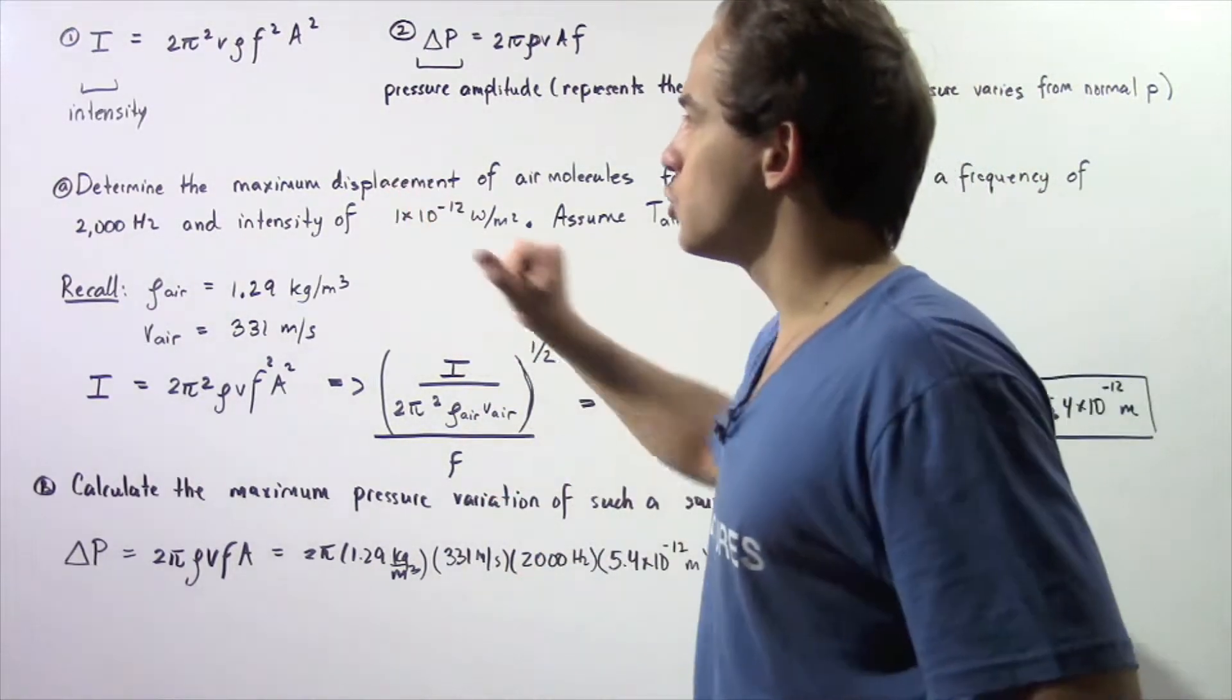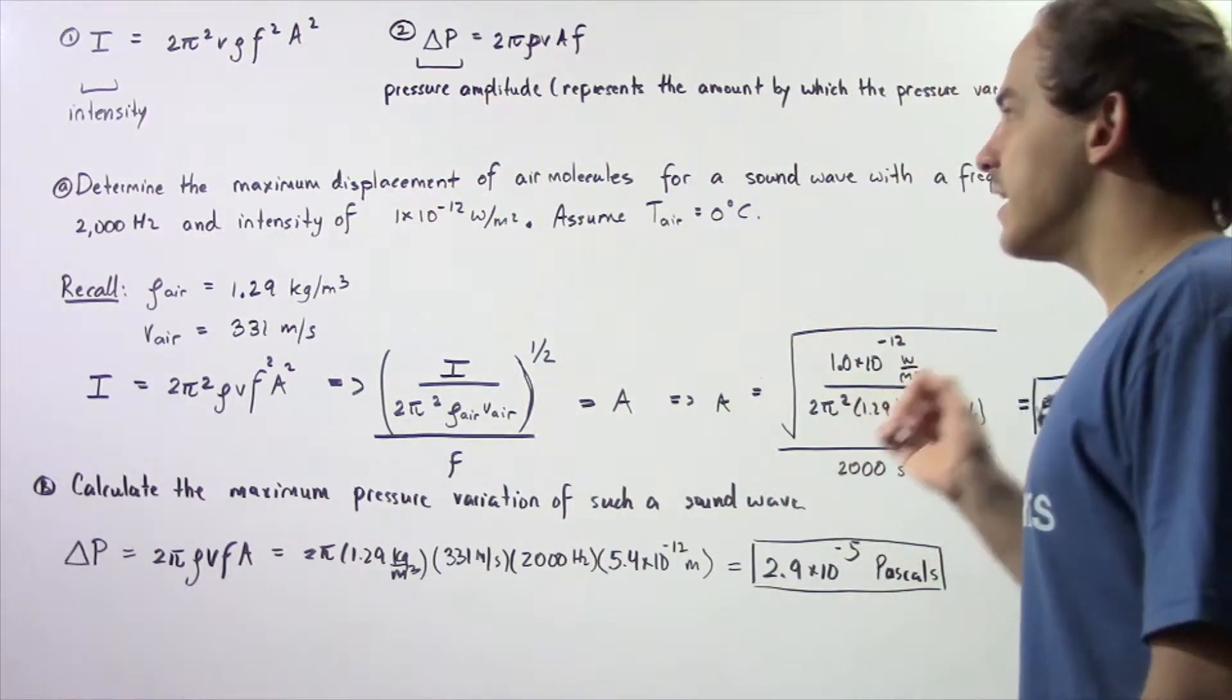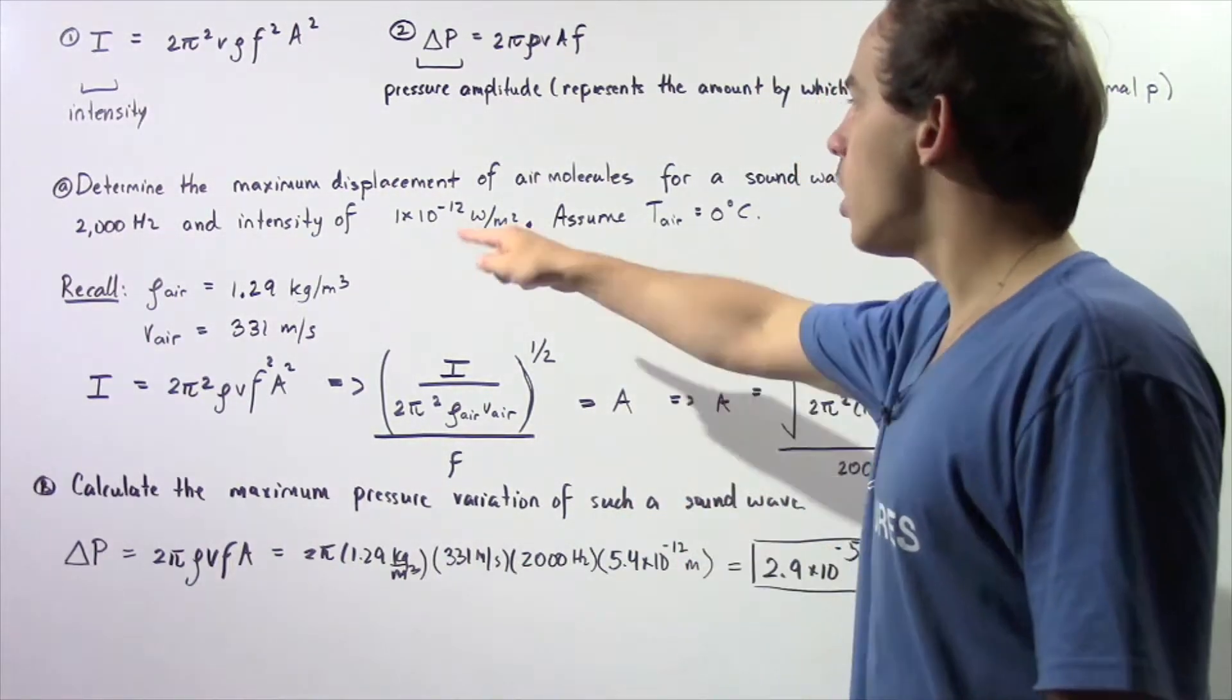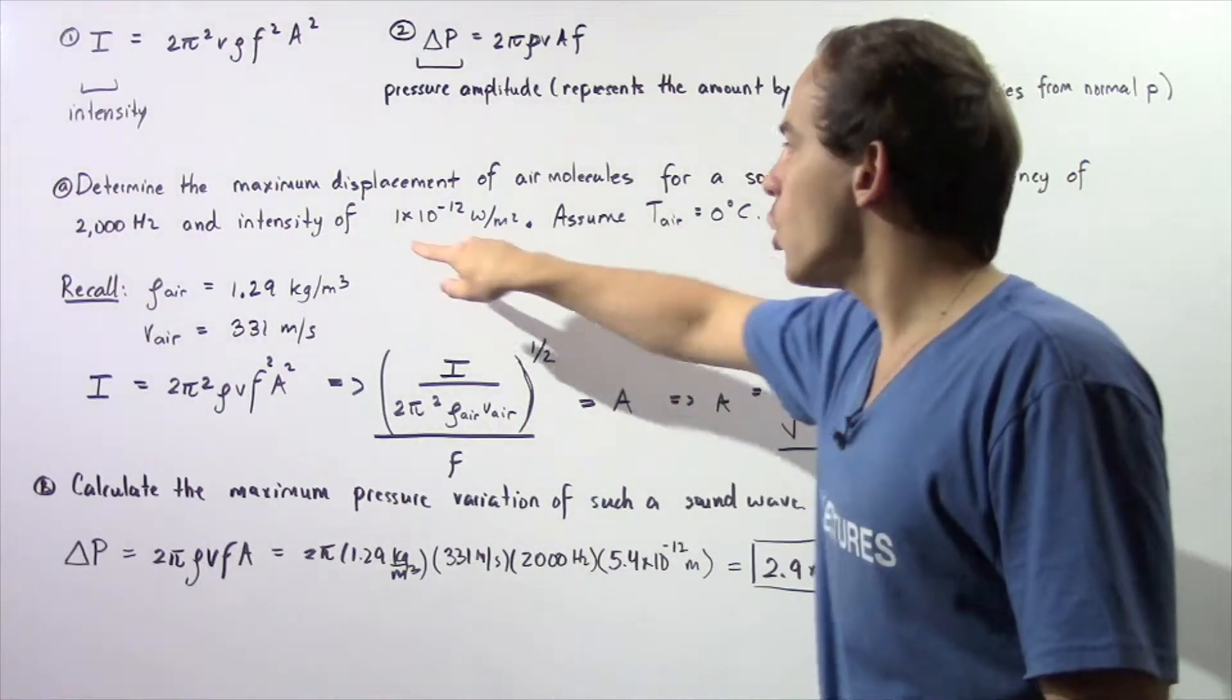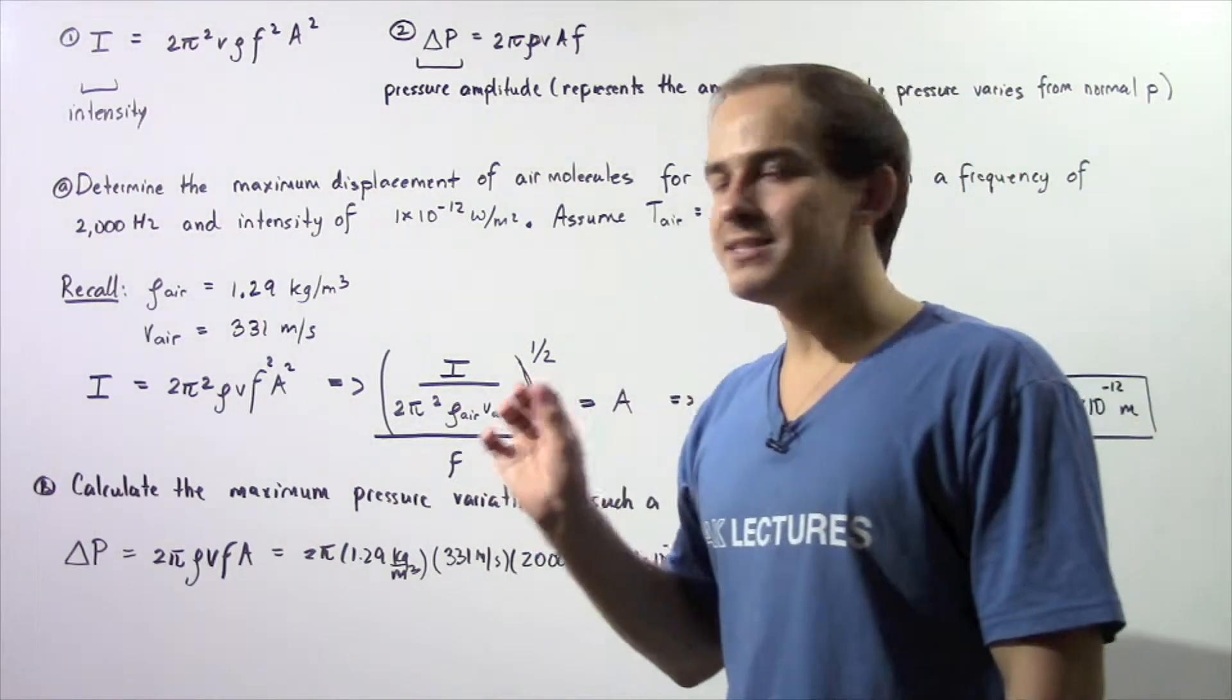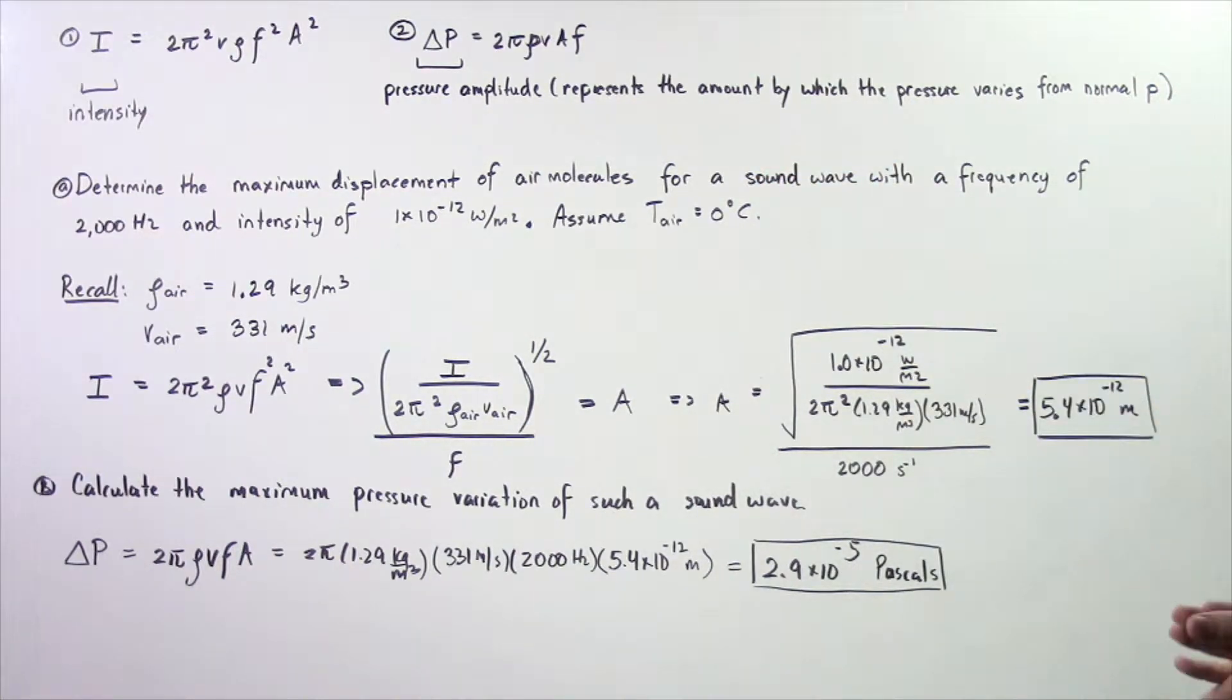Let's look at the following examples. In example A, we want to determine the maximum displacement of air molecules for a sound wave with a frequency of 2000 Hz and intensity of 1×10⁻¹² W/m². This intensity corresponds to the minimum intensity that the human ear is capable of detecting. Assume that the temperature of the air is 0°C.